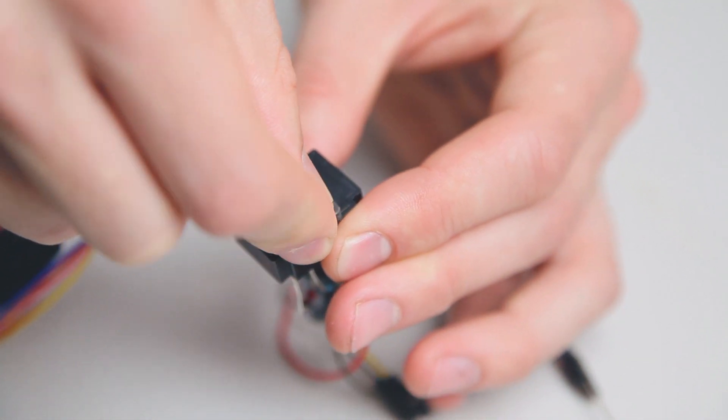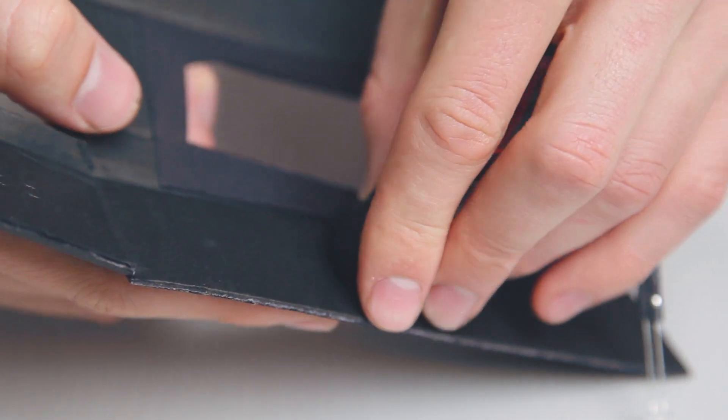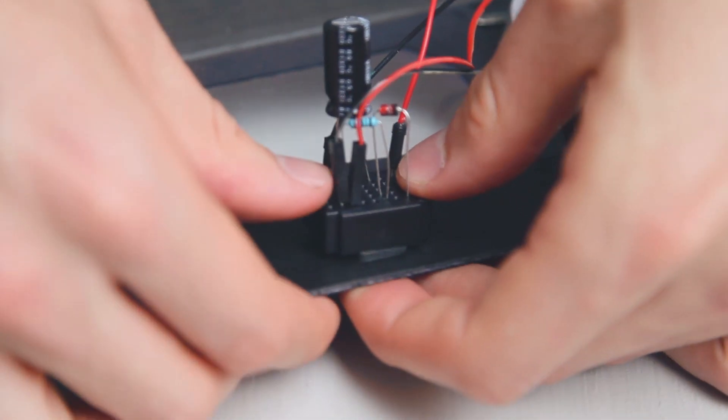Attach two sticky foam pieces to the bottom of your breadboard. Line it up with the two holes on your flashlight box and stick it down.